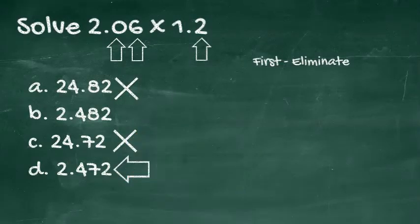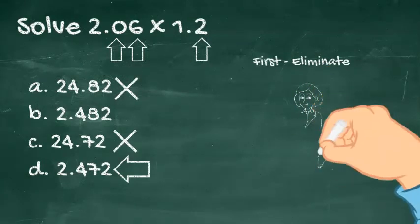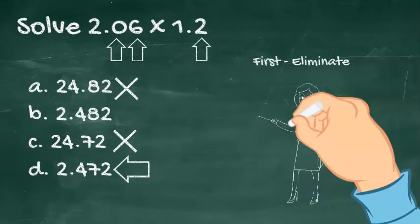The correct answer is D, 2.06 times 1.2 equals 2.472.